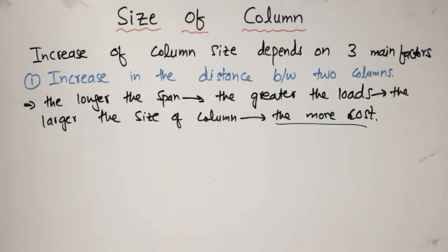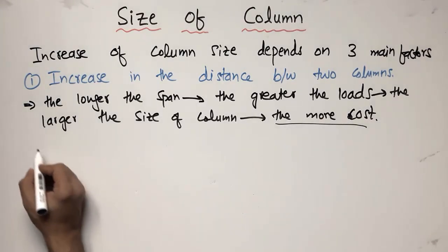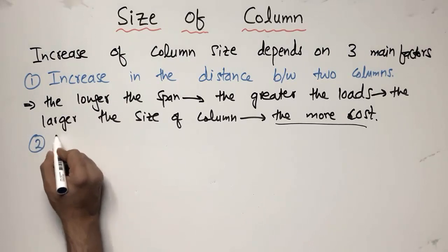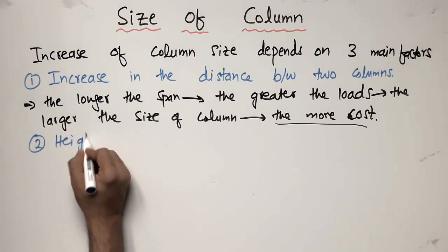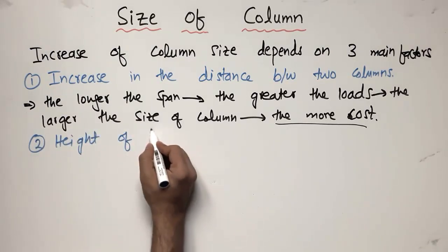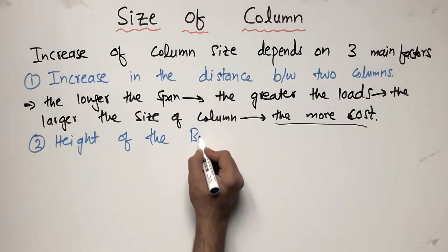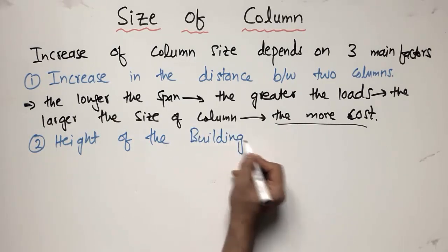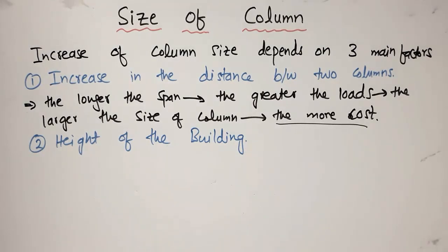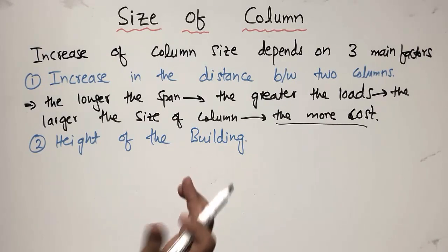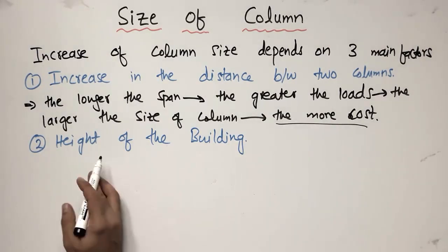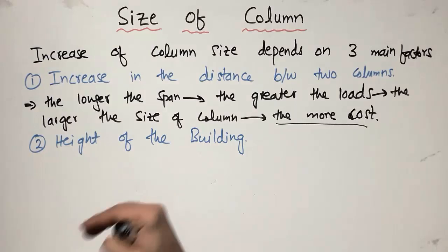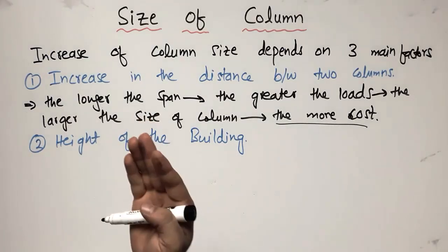The second factor that affects column size is the height of the building. It has been proven that if you increase the height of the building, the size of the column also increases proportionally.